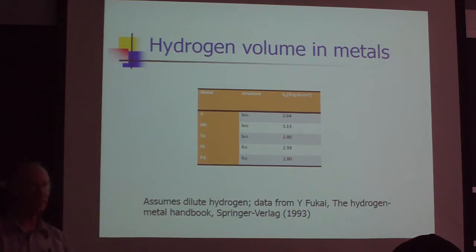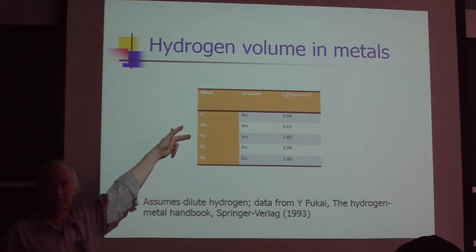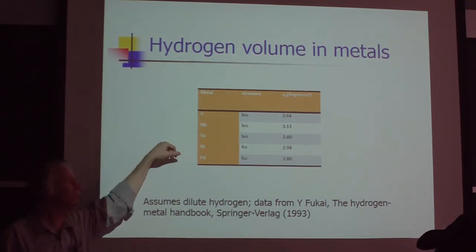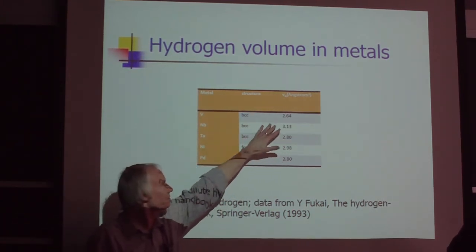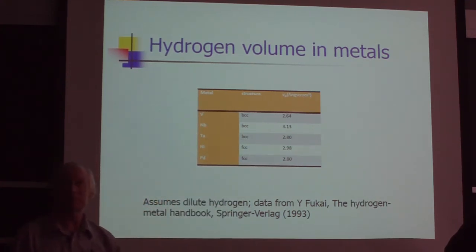The volume change can be understood as a volume associated with each hydrogen atom that goes in. And in this graph, we've got vanadium, niobium, tantalum which are the BCC simple metals which can hydride, and nickel and palladium which are the FCC metals that can hydride easily. And there's numbers here that go from 2.64 to 3.13 cubic angstroms per hydrogen.